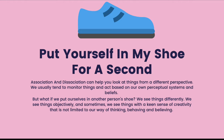We usually tend to monitor things and act based on our perceptual systems and beliefs. If you see someone frowning at you, you might automatically think that they're unhappy. But what if they weren't really frowning at you? What if they saw something interesting about you and they were trying to admire it closely and attentively? This is how our perceptions and beliefs about the world can shape the way we perceive things.